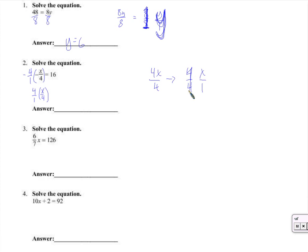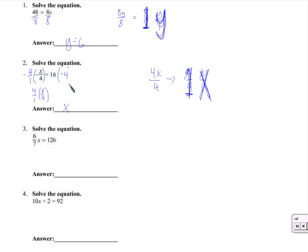4 over 4 is 1, x over 1 is x, and 1 times x is x. So all that worked out great. All we have to do is multiply by the same thing on the other side — that's multiplied by negative 4 — giving us negative 64.